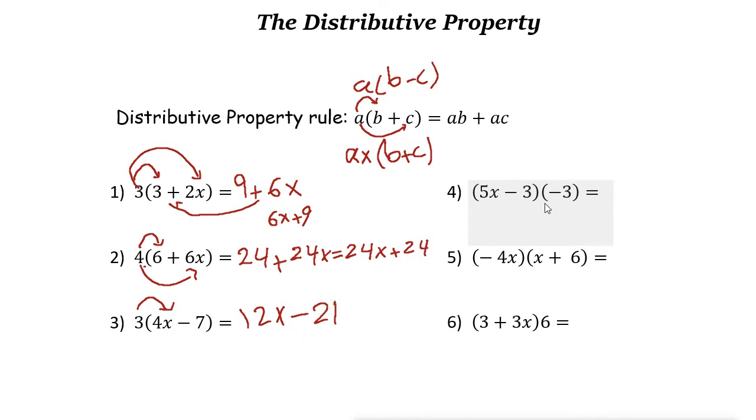Next one here: negative 3. This parenthesis is here, doesn't matter, you can write it here or there. So you can just write -3 times 5x minus 3, and then multiply. -3 times 5x is -15x.